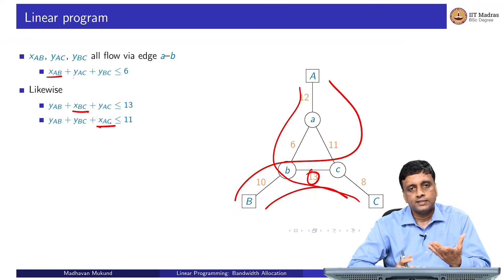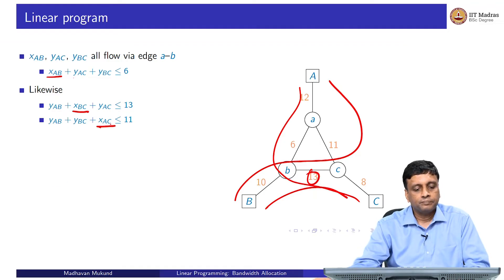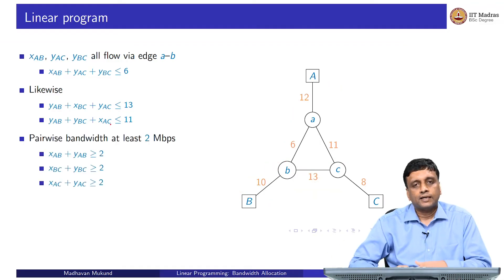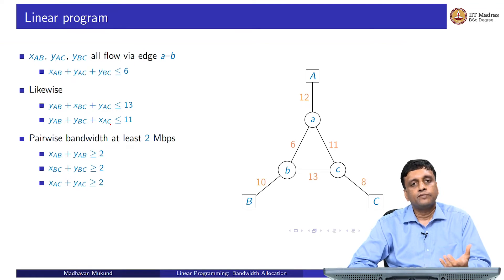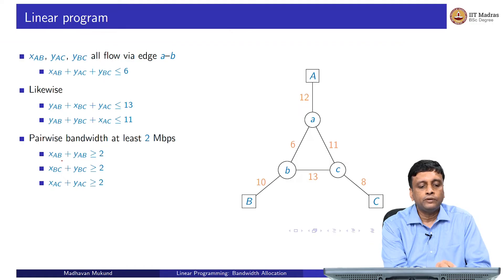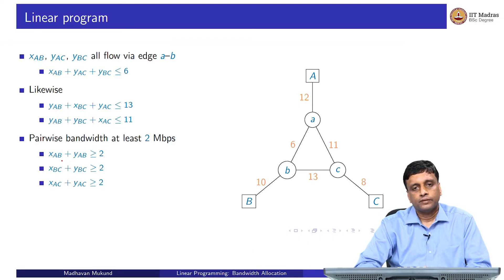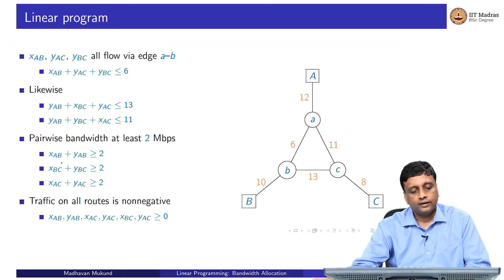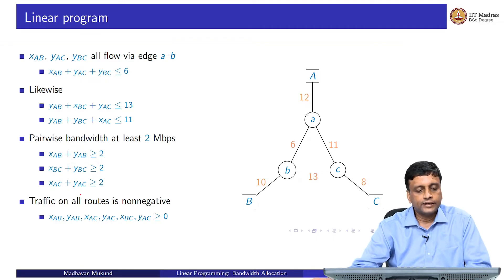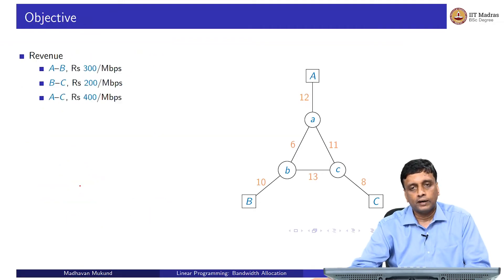So we have six edges and six capacity constraints. We also have the customer's service requirement constraint, which says the total traffic from A to B — the sum of traffic on the short and long link — must be at least 2. Similarly for B to C and A to C. Finally, we have that traffic cannot be negative, and we have the revenue objective to optimize.